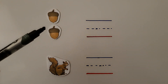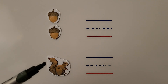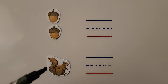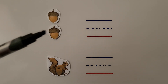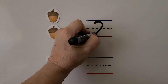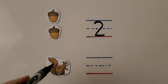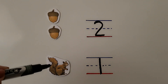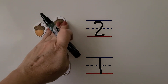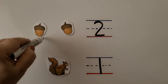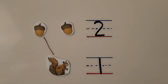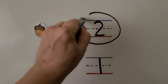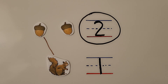Here we have a set of acorns — they fall from an oak tree — and here we have a set of squirrels. We count the acorns: one, two. We write the number two. There's only one squirrel. Two is greater than one. If we matched each acorn to a squirrel, there'd be an acorn left over. There's more acorns — a greater number of acorns than squirrels. Two is greater than one by one more.